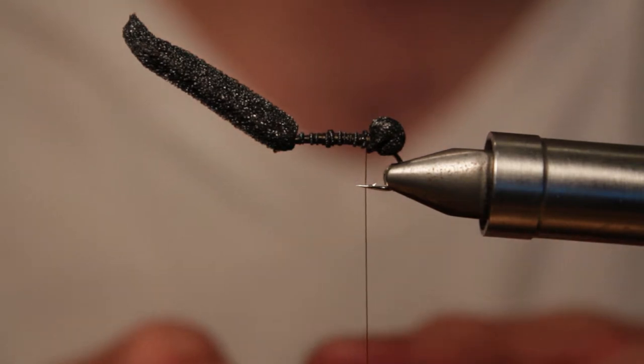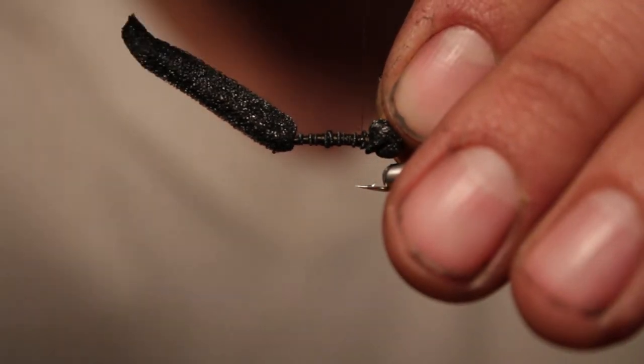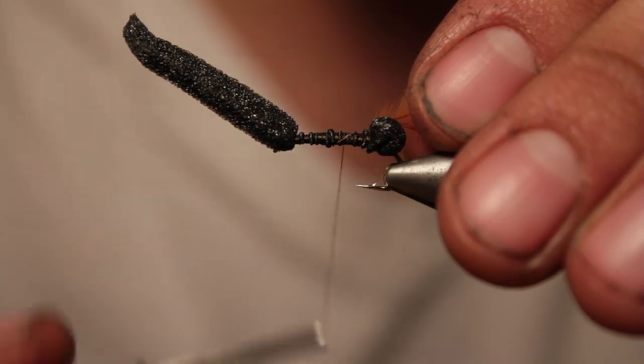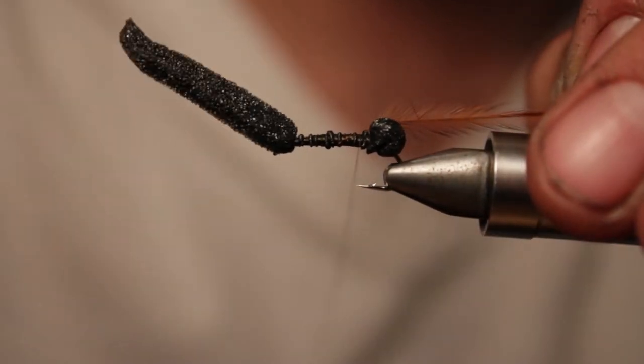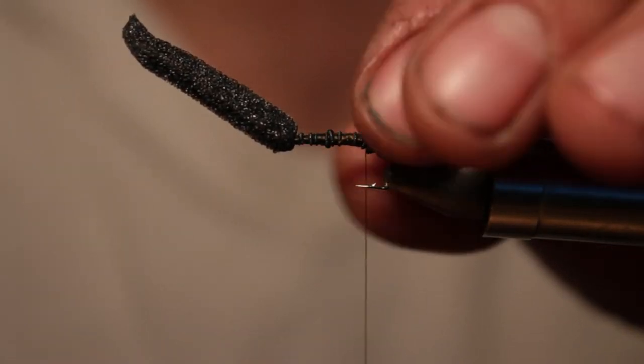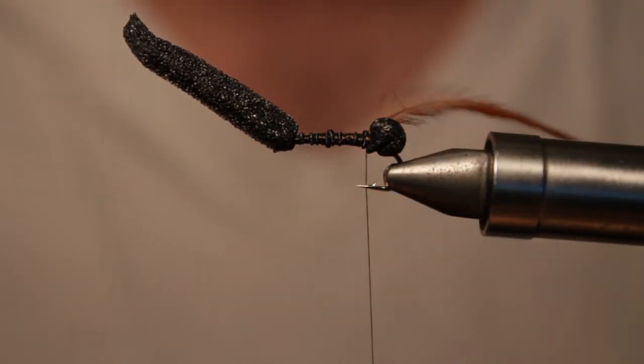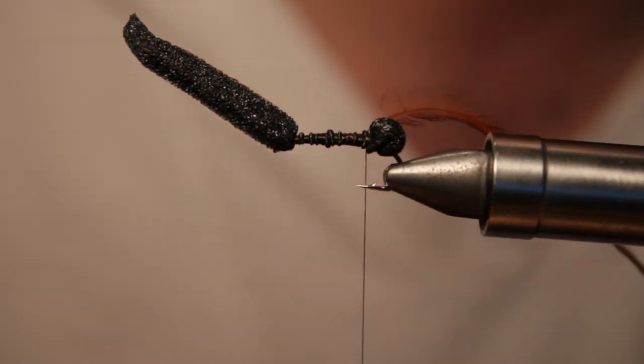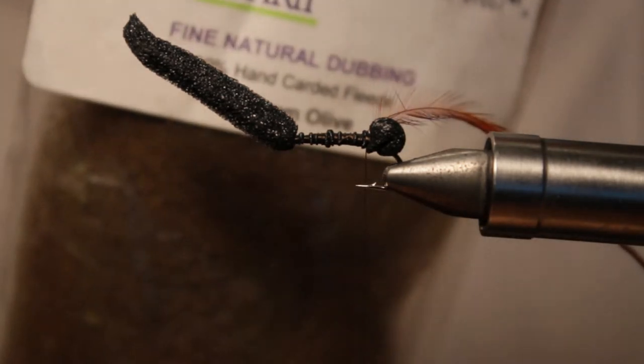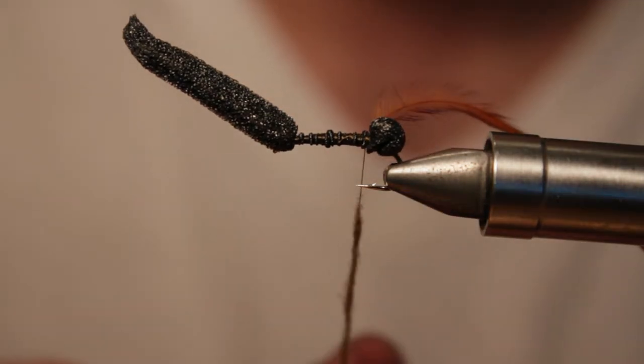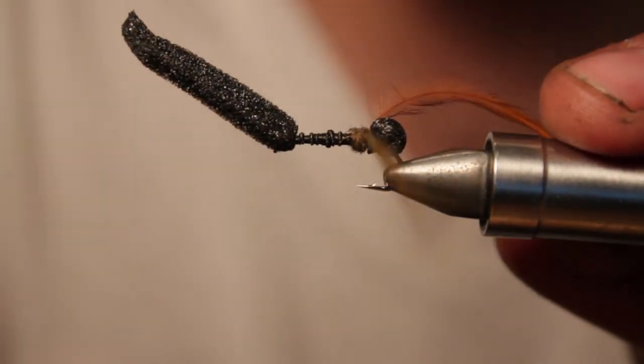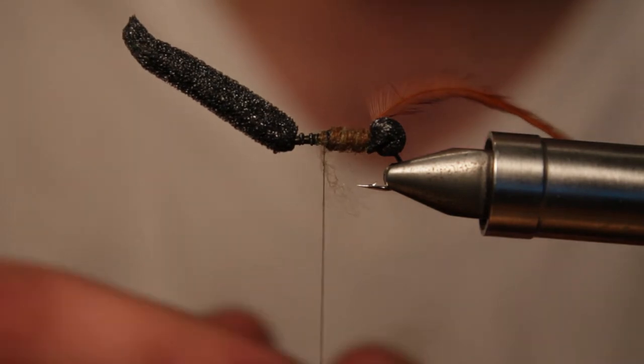In fact, size 16, size 18 is really what you want to be using on this pattern. So I'm going to tie my hackle in by the stem and then secure it right in front of that egg sac there. And then what we're going to do is we're going to get some dry fly dubbing. This is Nature's Spirit in brown olive. So get yourself a nice little dubbing noodle going. And this doesn't necessarily really need to be tapered either, it just needs to cover up your foam.